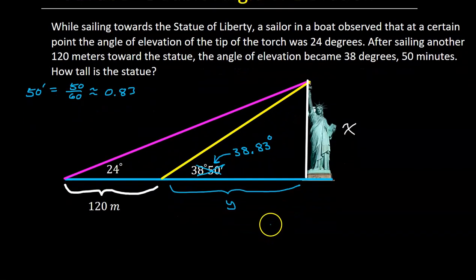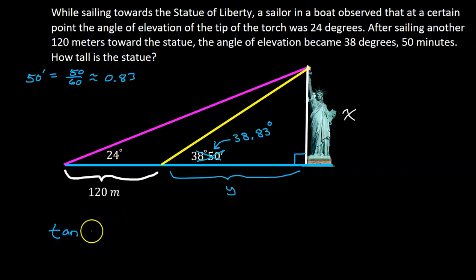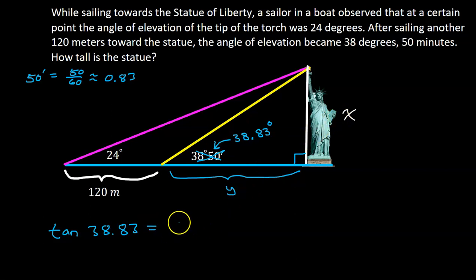We are going to have a system of equations. Looking at the right triangle involving Y, I could write the following equation. The tangent of 38.83 degrees — tangent is opposite over adjacent — so that would be X over Y. By itself, I can't solve this equation because it has two variables. That is one variable too many.